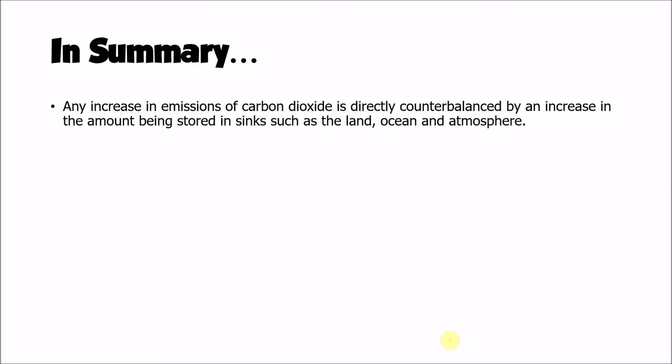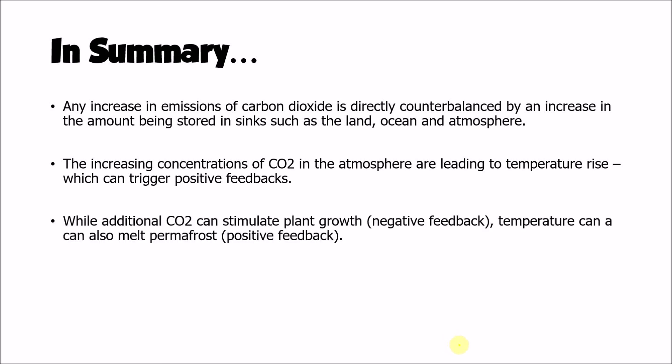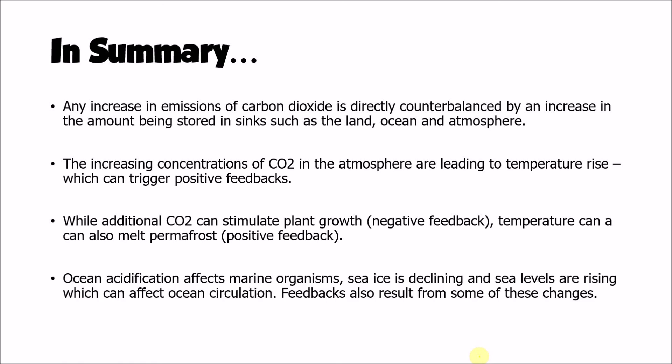In summary, any increase in the amount of carbon dioxide released by human activity is directly counterbalanced by the amount of carbon being stored in sinks such as the land, the ocean and the atmosphere. As a result of increasing concentrations in the atmosphere, temperatures are rising and that can trigger positive feedbacks. While plant growth is stimulated by additional carbon dioxide — a negative feedback — temperature can also melt permafrost, causing a very significant positive feedback. Ocean acidification affects marine organisms, sea ice is declining, and sea levels are rising, which can both affect ocean circulation and trigger further feedbacks.